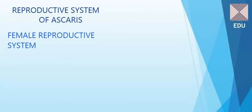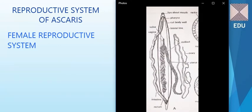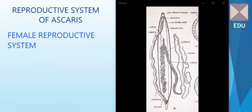The posterior side of the female is quite straight, not curved like the male. Looking at the diagram of the female reproductive system, you can very well see the presence of the ovaries.